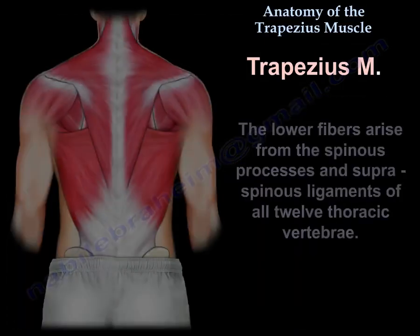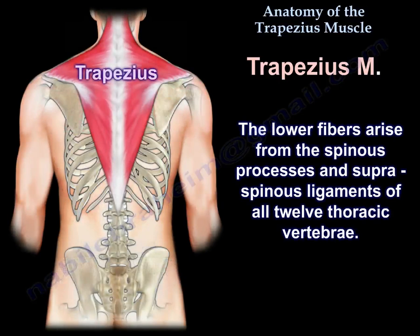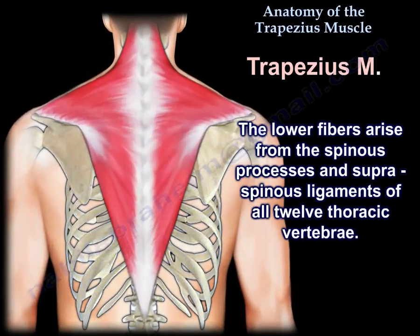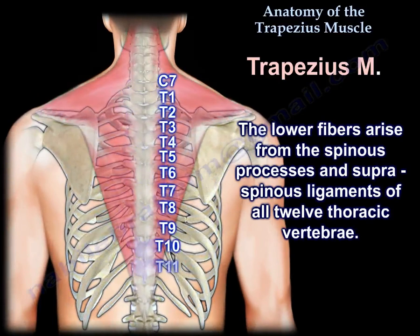The lower fibers arise from the spinous processes and supraspinous ligaments of all 12 thoracic vertebrae.